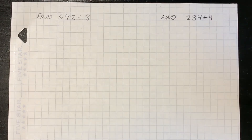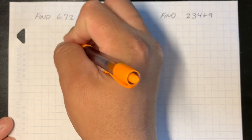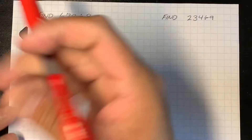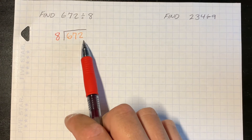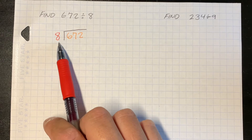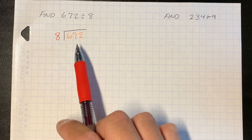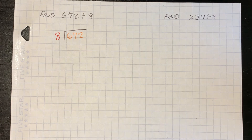You can pause this video and work out the problems. The first step is to set up the problem for solving. We have the dividend 672 divided by the divisor 8. The dividend 672 is the total amount that we want to divide up, and we want to divide that by the divisor 8 — the number that we divide by. Think of this as 672 head of sheep divided into 8 groups. How many times can we divide 8 into 67?